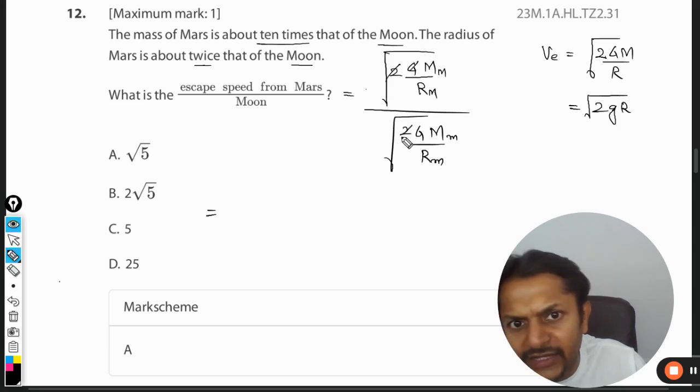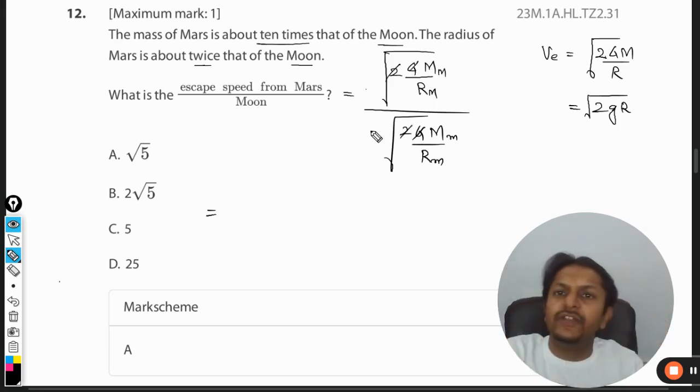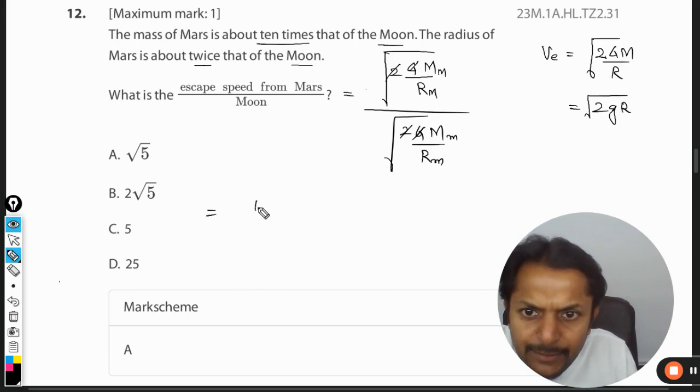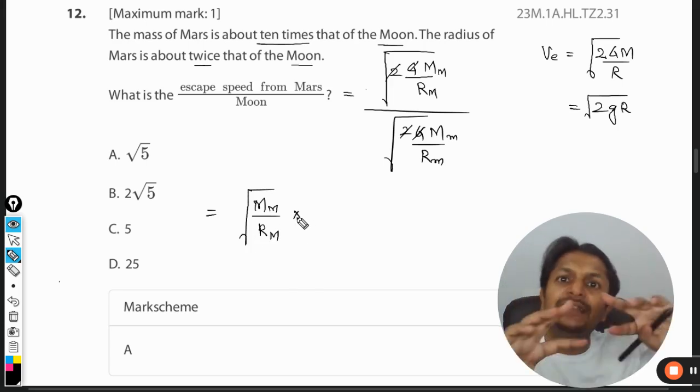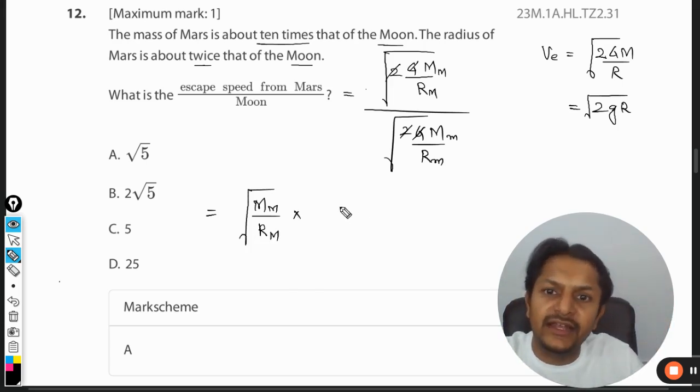I can get rid of all the constant values, and the reciprocal will be happening here. So it will be the square root of mass of Mars divided by radius of Mars, multiplied by the reciprocal of the denominator. Do not get confused.